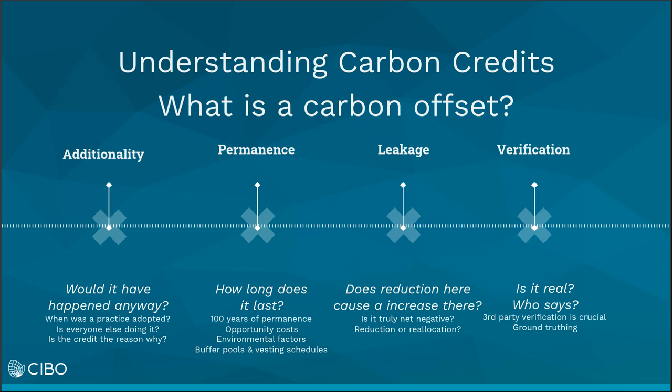Another component to mention is leakage — did the reduction here cause an increase there? Is it truly net negative, or did the adoption of these practices on one part of the land just yield some other change elsewhere? Is it a reduction or is it a reallocation?